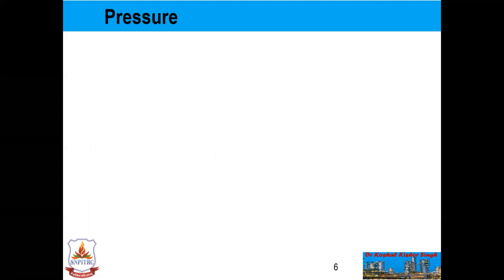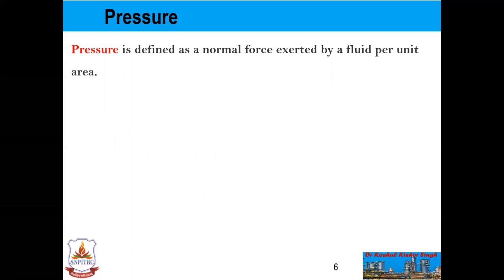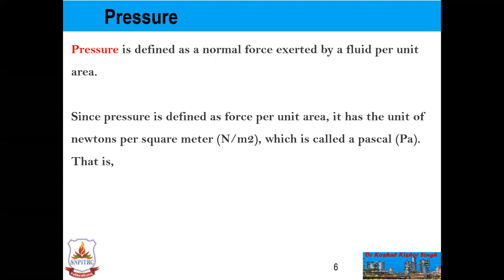Now we will see pressure. Pressure is defined as a normal force exerted by a fluid per unit area. We speak of pressure only when we deal with a gas or a liquid; the counterpart of pressure in solids is normal stress. Since pressure is defined as force per unit area, it has the unit of Newtons per square meter, which is called a Pascal — 1 Pascal equals 1 Newton per meter square. The actual pressure at a given position is called the absolute pressure, measured relative to absolute vacuum.